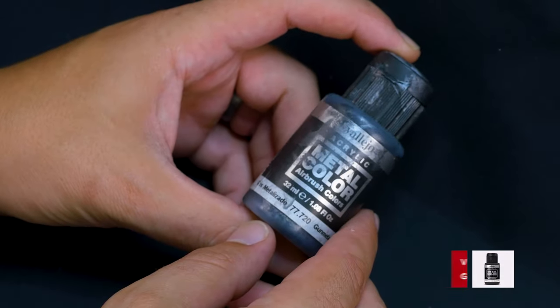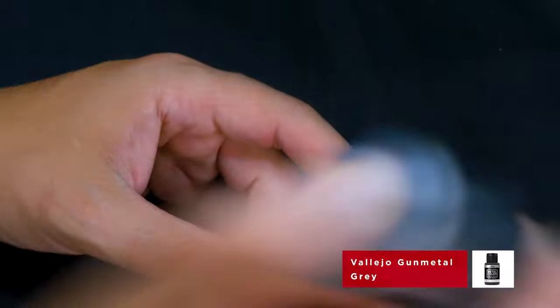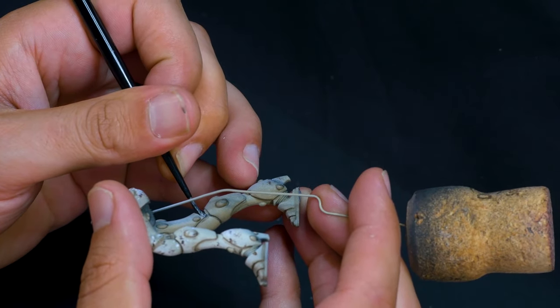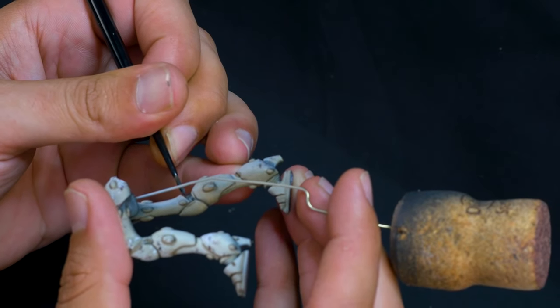Now I'm going to use Vallejo gunmetal to fill in all the bits of the undersuit of the model. These are all the little flexible parts behind the knees and on pretty much all the joints.